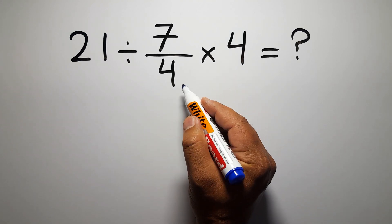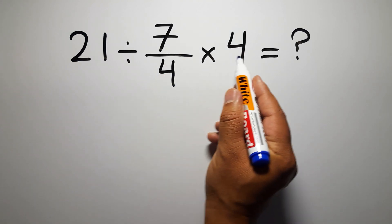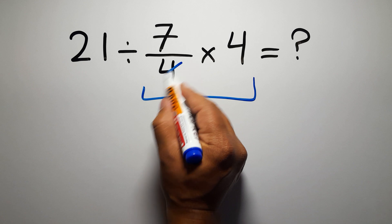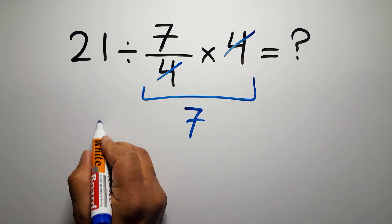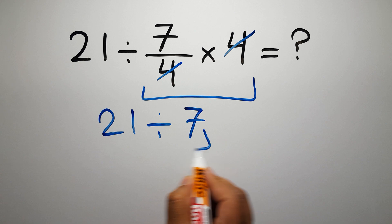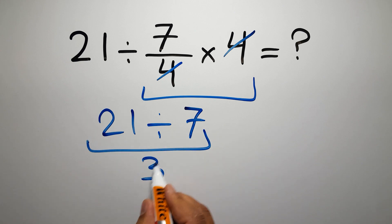First we do this multiplication 7 over 4 times 4. We can easily cancel this 4 and this 4, so we have just 7, and 21 divided by 7 gives us 3. But this answer is not correct because according to the order of operations, multiplication and division have equal priority.